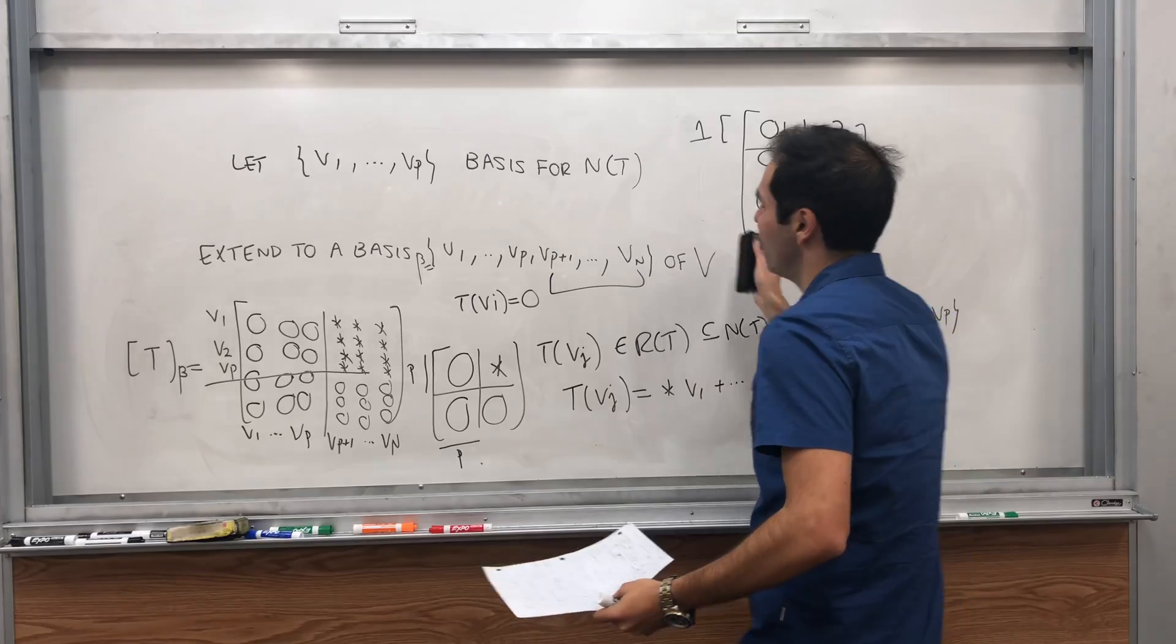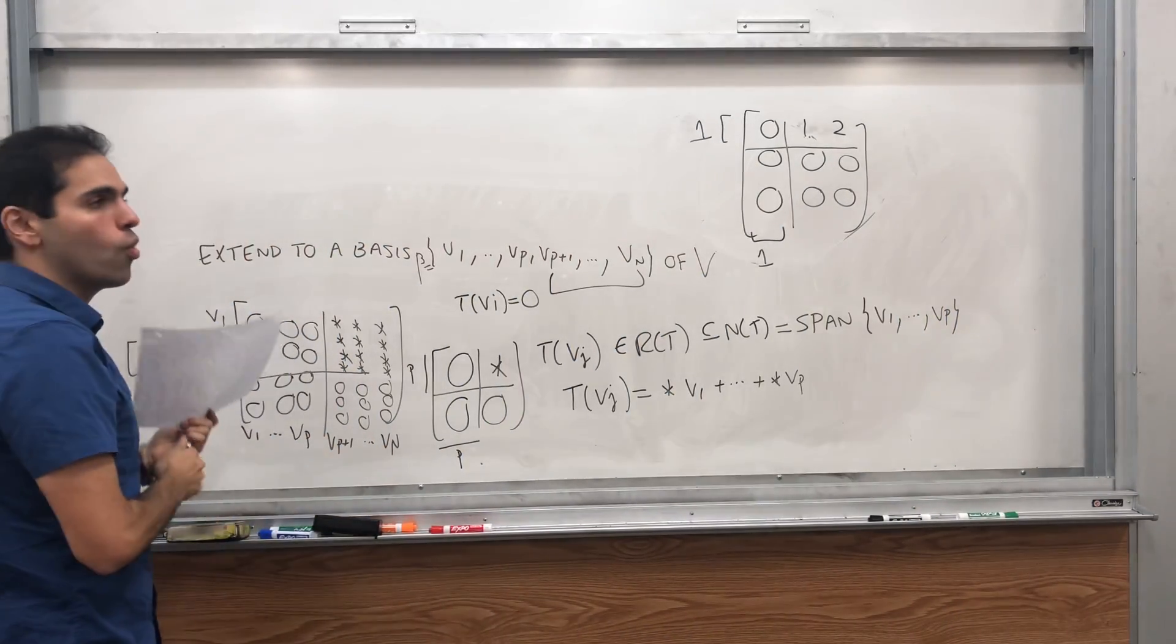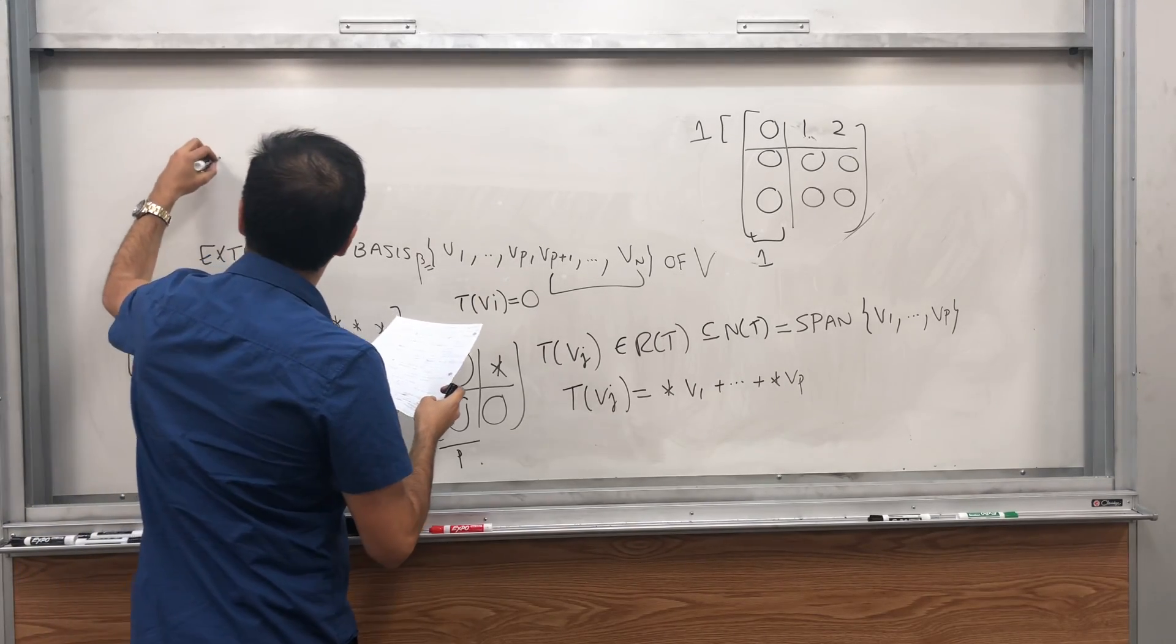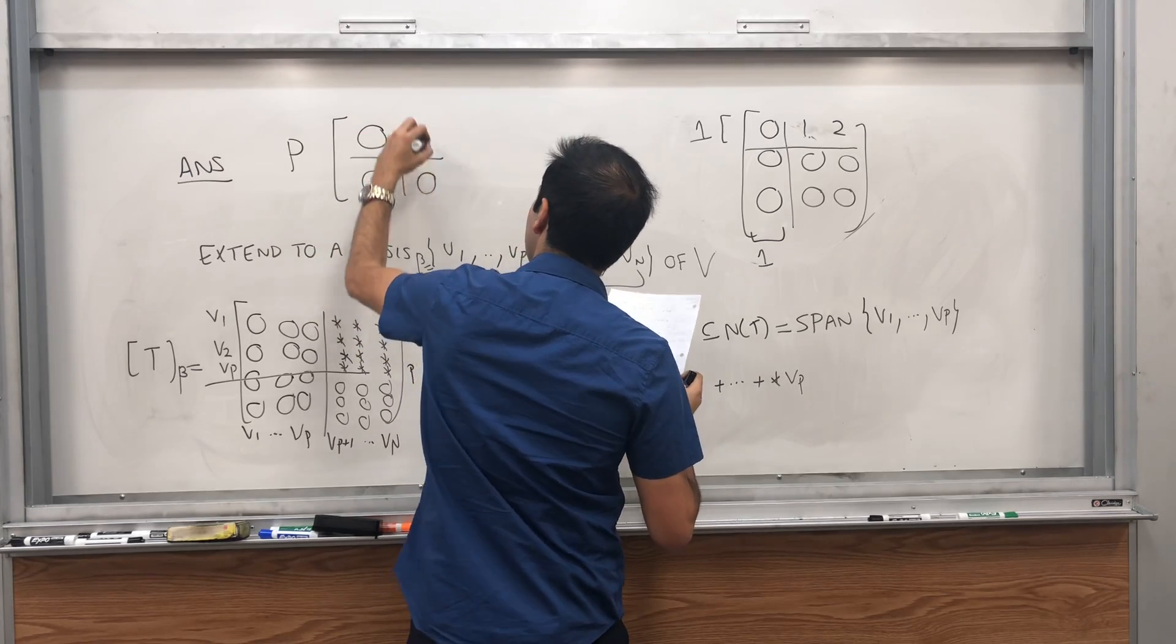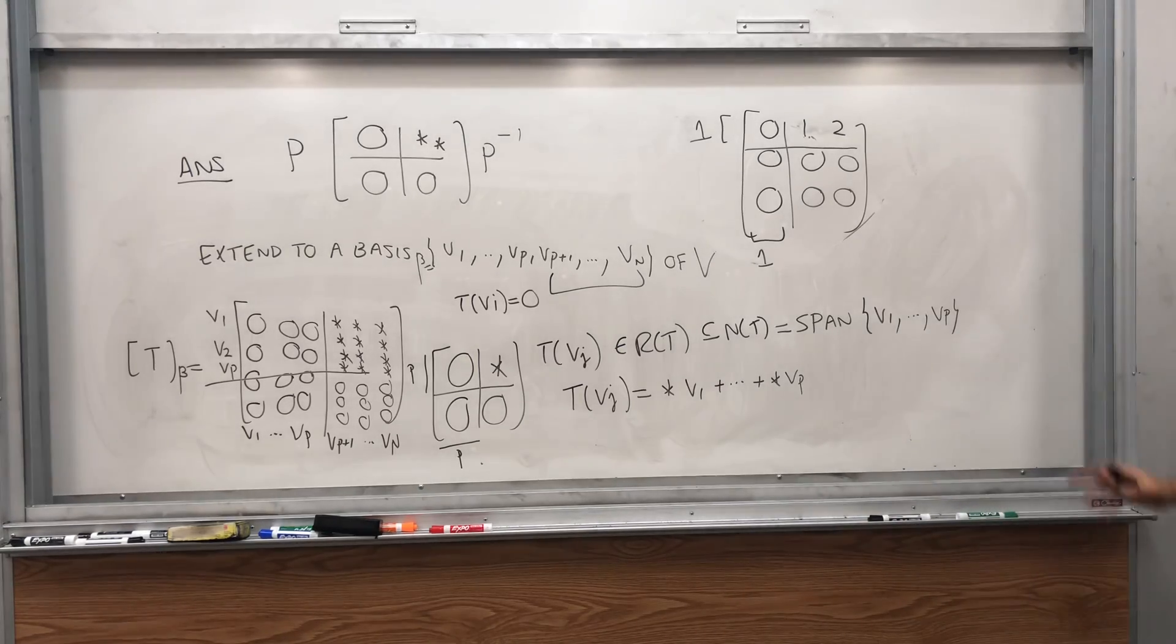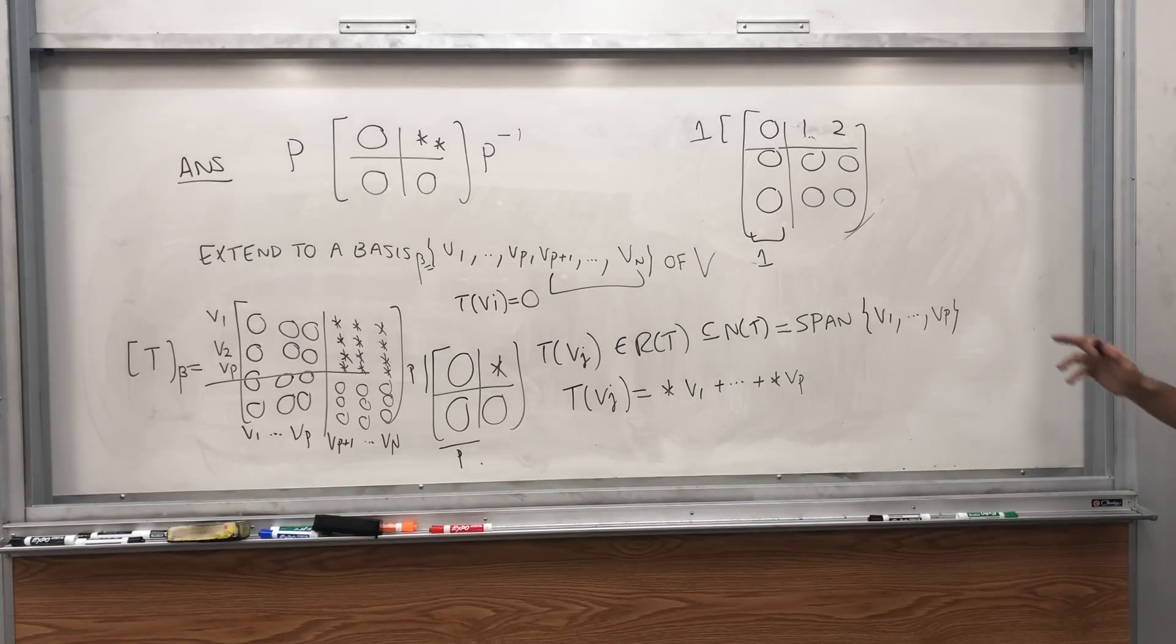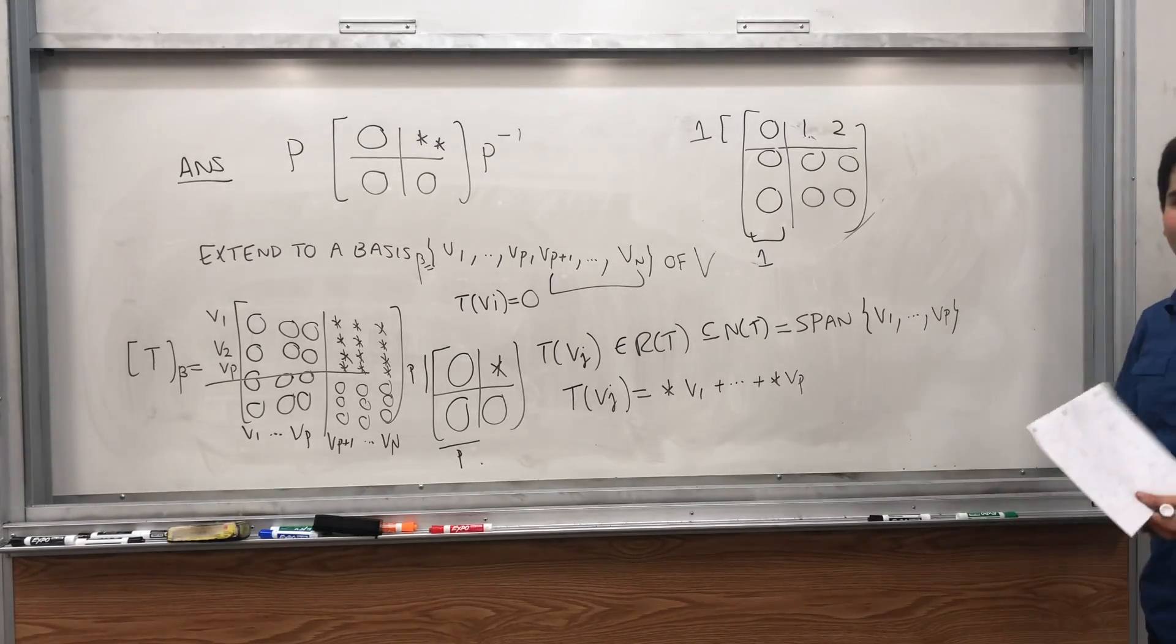And in general, if you have any other basis, well, you then just use a change of coordinates matrix. So, the answer is really P times, again, this block matrix with a bunch of stars and then P inverse. That's why it's okay if, for example, those two columns are switched or something. It's not in this example, but in general, this is true. And those are, again, really all the matrices.